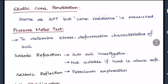The static cone penetration test is similar to the SPT but uses a cone-shaped structure. It is a manual test where the resistance to manual forcing into the soil is directly measured. The pressuremeter test is used to determine the stress-deformation characteristics of the soil.